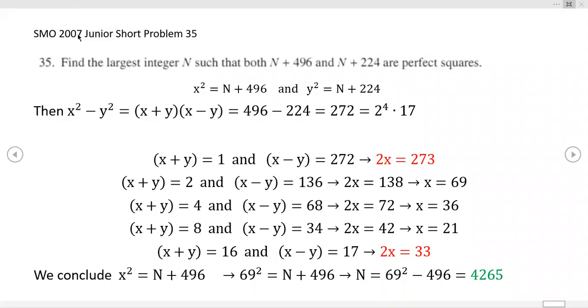This is an SMO problem all the way back to 2007, a junior short problem 35, the last problem on the test. The problem states: find the largest integer N such that both N + 496 and N + 224 are perfect squares.